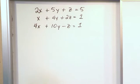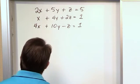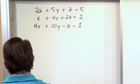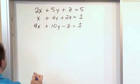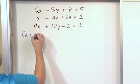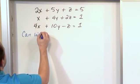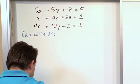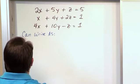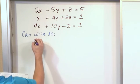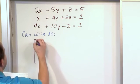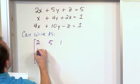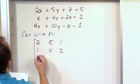Now this is linear algebra, so we're talking about matrices. We can represent this system of equations in terms of a matrix. We can write it as the following: 2, 5, 1, 1, 4, 2, 4...